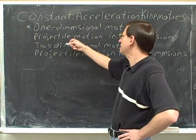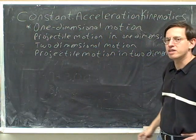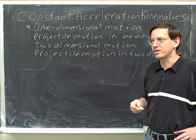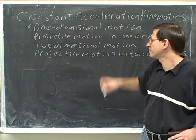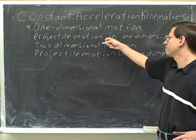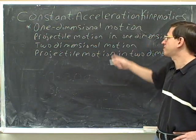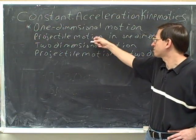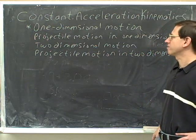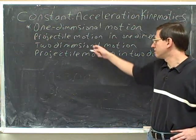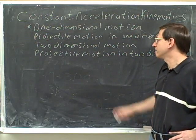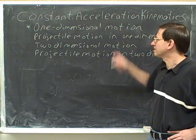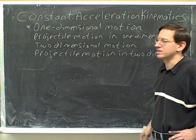Projectile motion is just a type of kinematics. It's when you have something moving only under the force of gravity. That's really projectile motion in one dimension — a special case of one-dimensional motion. And then after one-dimensional motion, you'd want to learn about two-dimensional motion, and one of the special cases of that is projectile motion in two dimensions.